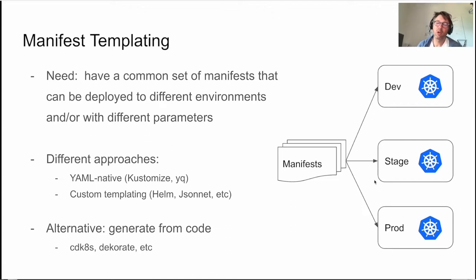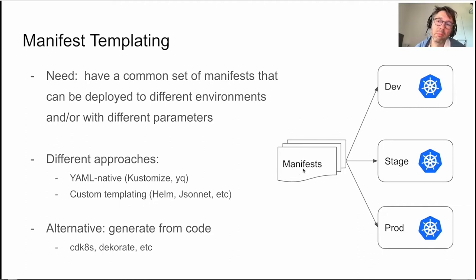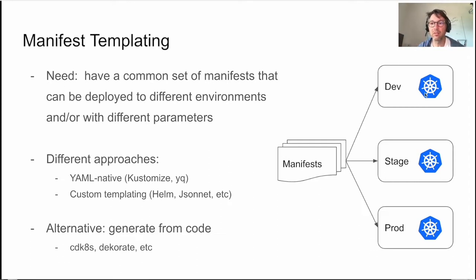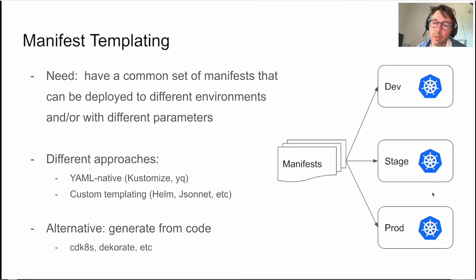Now let's look at more advanced concepts — templating. You'll pretty quickly run into this. Let's say you have a set of manifests you're deploying to different environments: dev, stage, prod. There are some differences — different resource limits, network settings, namespaces — but many other settings are the same. You want a core set of manifests and a way to modify them for each environment. There are a couple of different approaches to this.